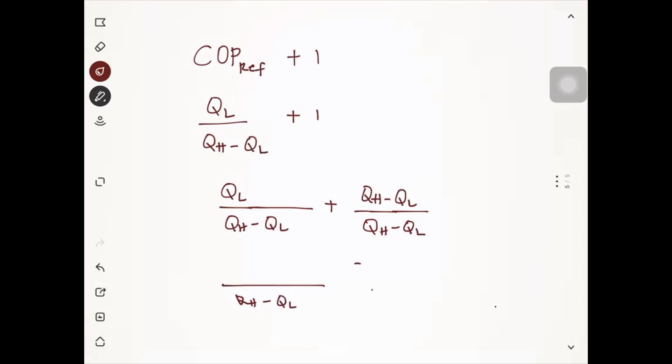So let me simplify this one. The QL will be cancelled, so the remaining will be the QH for the numerator divided by QH minus QL.